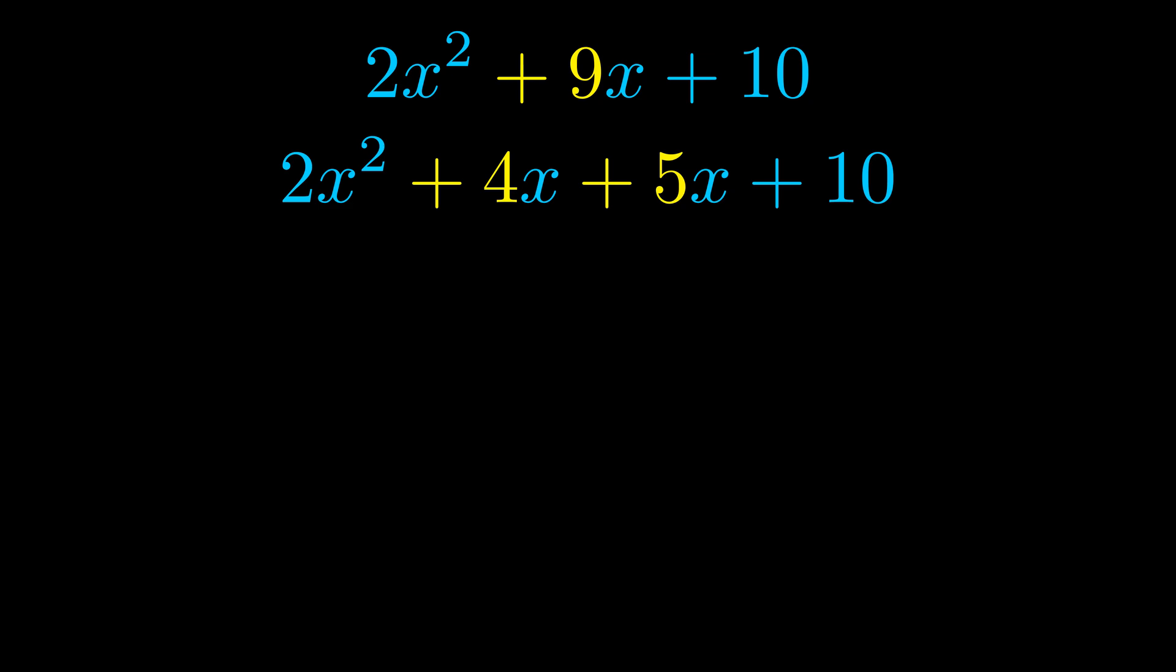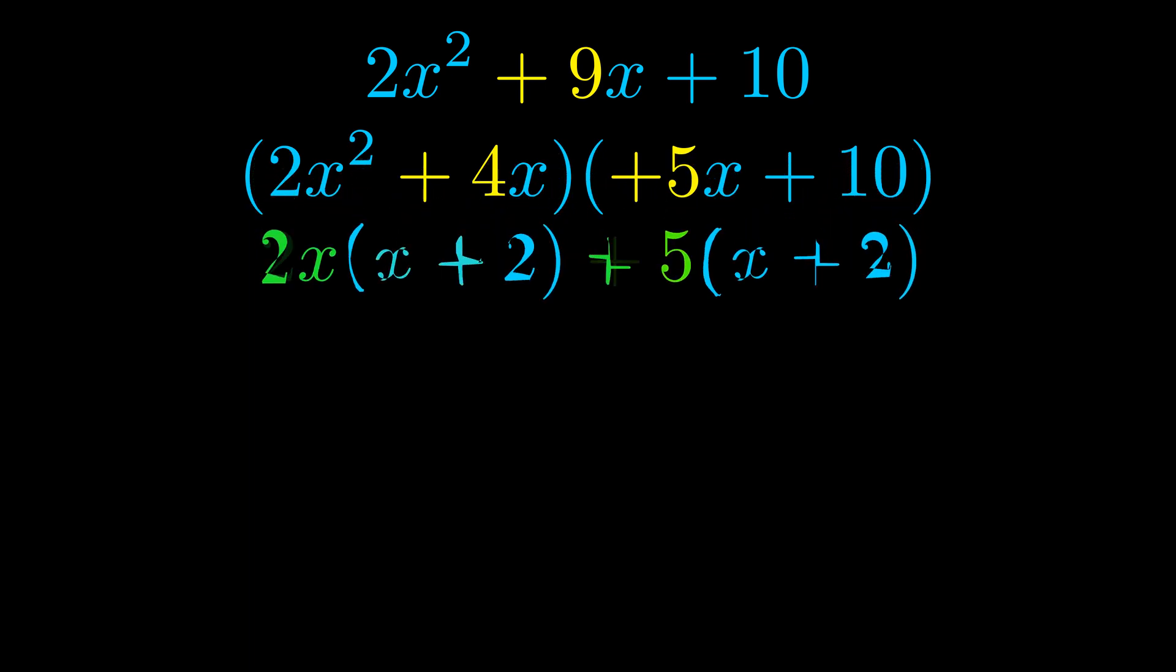Once we've done this we go ahead and we put parentheses around the first term and the last term. And we do that so that we can take the greatest common factor out of both terms. We can see the greatest common factor is now outside in green.